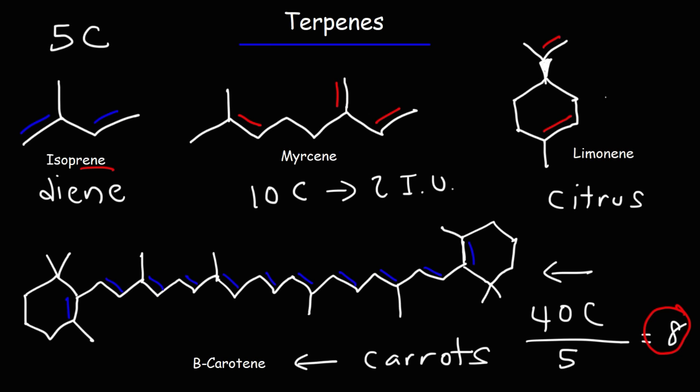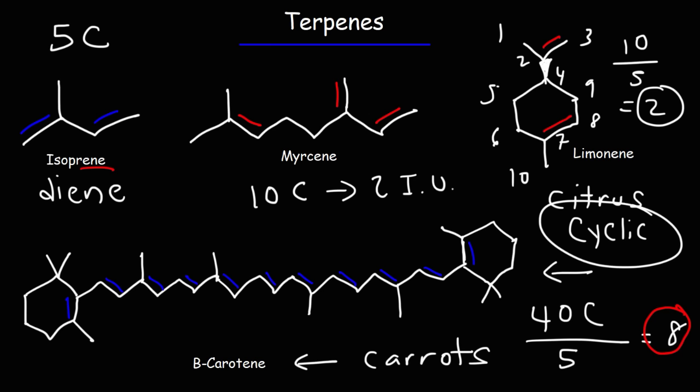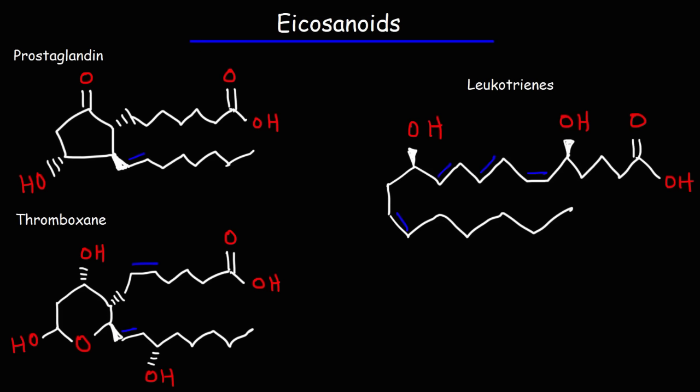If we look at limonene, it has ten carbon atoms. So ten divided by five will give us two. So it takes two isoprene units to make up limonene. Limonene is an example of a cyclic terpene because it has a ring. So that's it for terpenes, another type of lipids that you may need to be familiar with. Now let's move on to our last category, eicosanoids.